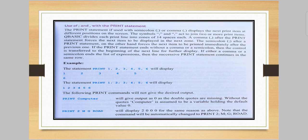The following PRINT commands will not give the desired output. PRINT computer will give output as zero because the double quotes are missing. We should have written computer as a string enclosed in double quotes, but we didn't include it in the expression, so it displays zero. Without the quotes, computer is assumed to be a variable holding the default value zero. PRINT 2mg road will display 2000 for the same reason. Note that the command will automatically change to PRINT 2 semicolon m semicolon g semicolon road.